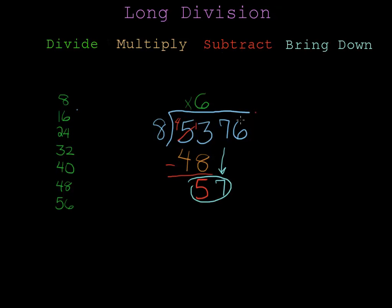Now notice that I have not finished dividing. So I need to repeat all of my steps. So I go back to the beginning and I'm going to have to divide again. 8 into 57 this time.